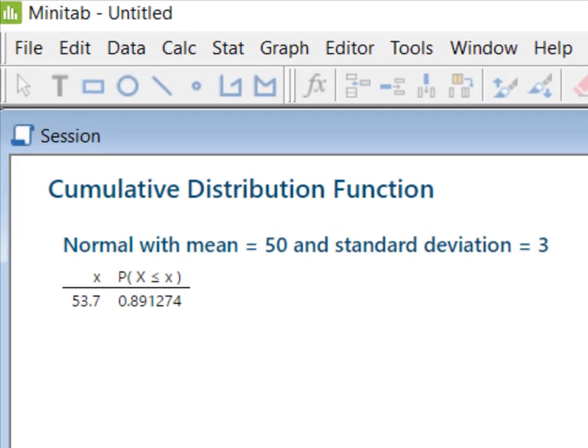And what Minitab gives us is the probability of finding a value of x that is less than 53.7 pounds. Remember that's the way this cumulative distribution function works. So the probability that a value is less than 53.7 pounds is 0.891274.